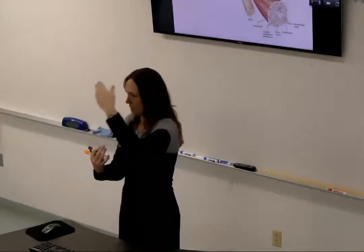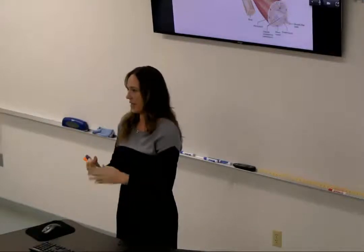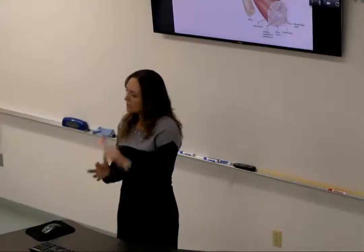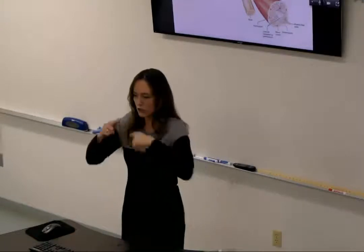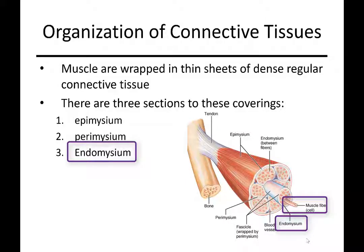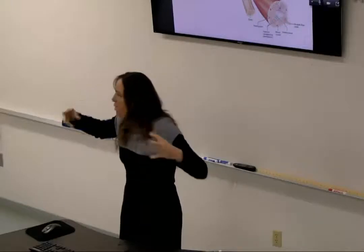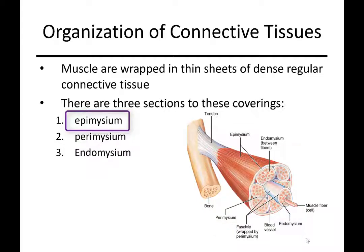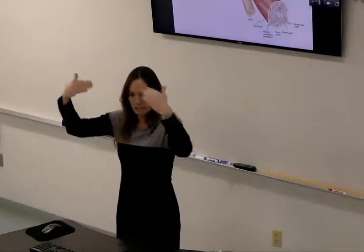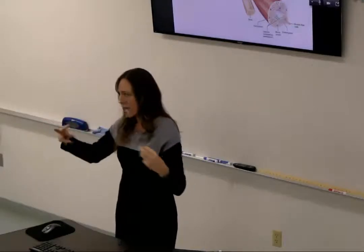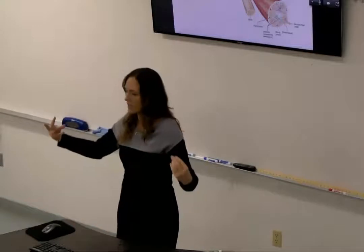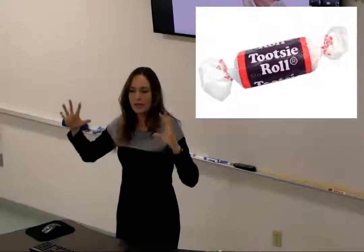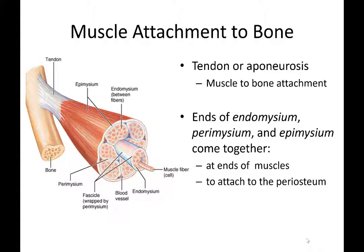Each layer we're wrapping around — starting from the endomysium around the single muscle cell, to the groups with their own extra wrapping (perimysium), to finally the groups bundled together with epimysium — they all have this sort of hanging-off end like a Tootsie Roll wrapper. That is the tendon.